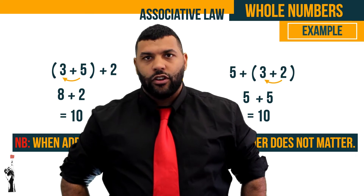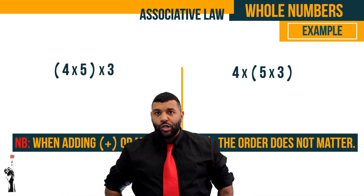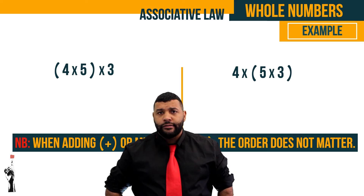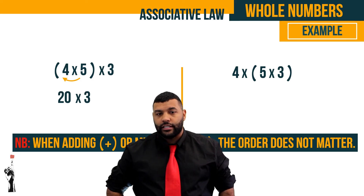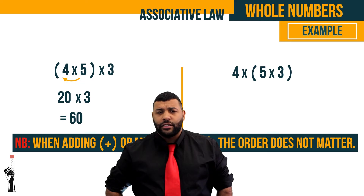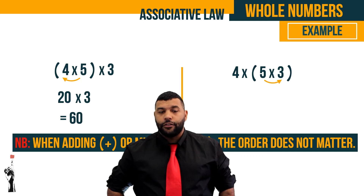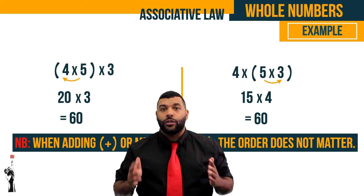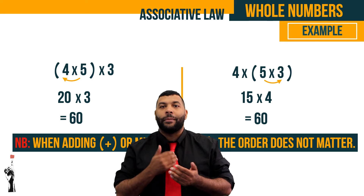Let's look at another example applying the associative law to multiplication. We have 4 times 5 times 3. Grouping 4 and 5 together: 4 times 5 is 20, and 20 multiplied by 3 gives us 60. If we group the 5 and the 3 instead: 5 times 3 is 15, and 15 multiplied by 4 gives us 60. It doesn't matter which numbers we group together as long as the operation remains the same.